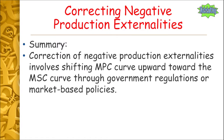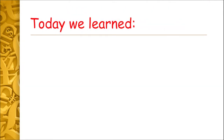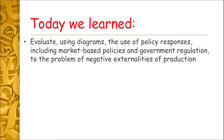To summarize: correcting negative production externalities involves shifting the MPC curve upward towards the marginal social cost curve through government regulations or market-based policies. For allocative efficiency to be achieved, the quantity of the good produced and consumed must fall to Q-opt as price increases to P-opt. That brings us to the end of today's lesson where we looked at the different ways of correcting negative production externalities using market-based policies and government regulations.